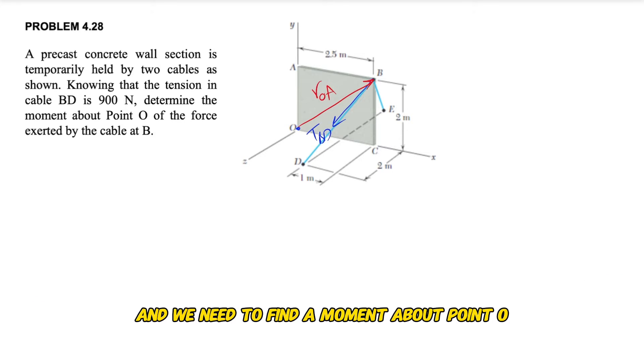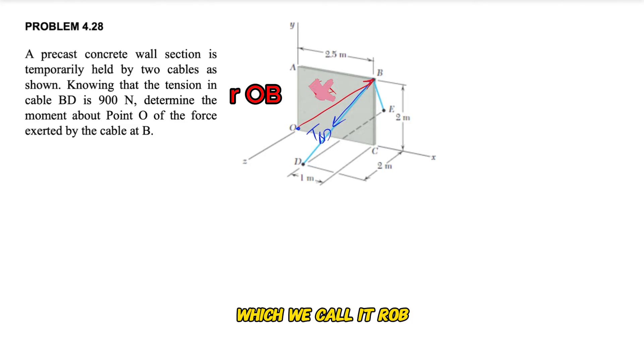We need to find the moment about point O. For that, our position vector would be this vector, which we'll call r_OB. All we need to do is find the moment of this force about point O. Since we are in 3D, we need to find the vector form of T_BD.